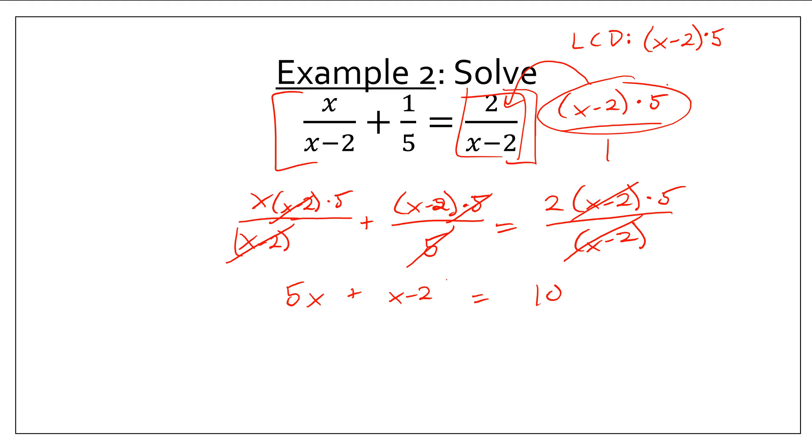And this is a very easy equation to solve now. These combine to 6x. I can add 2 to the other side. So, 6x equals 12. I can divide by 6 to get that x equals 2. How nice was that? So, what I did is I determined the LCD and I multiplied every fraction by the LCD and it canceled all of the denominators. Awesome.